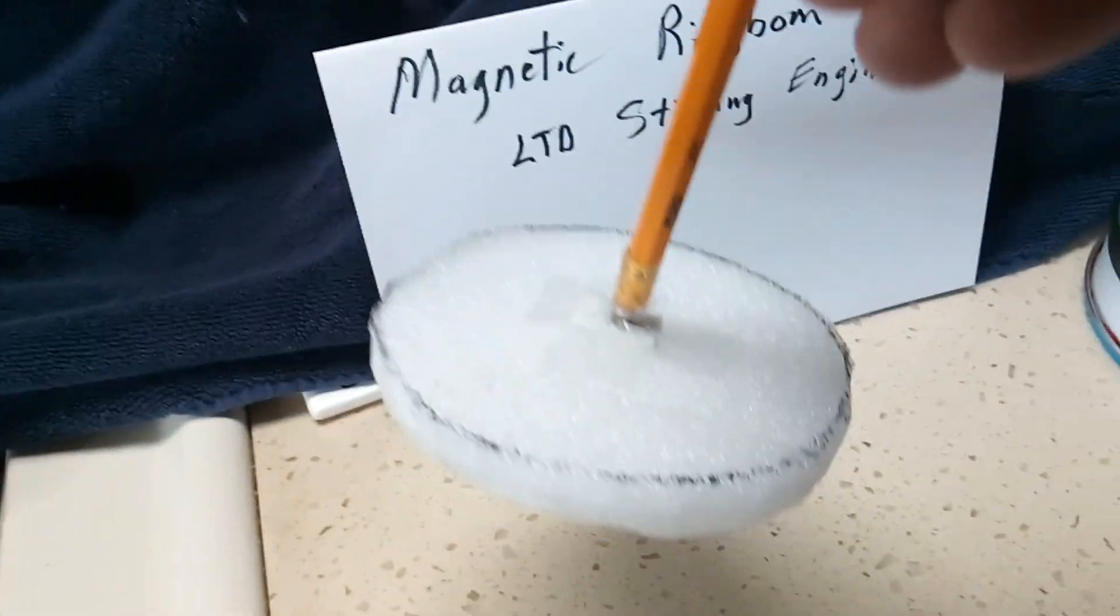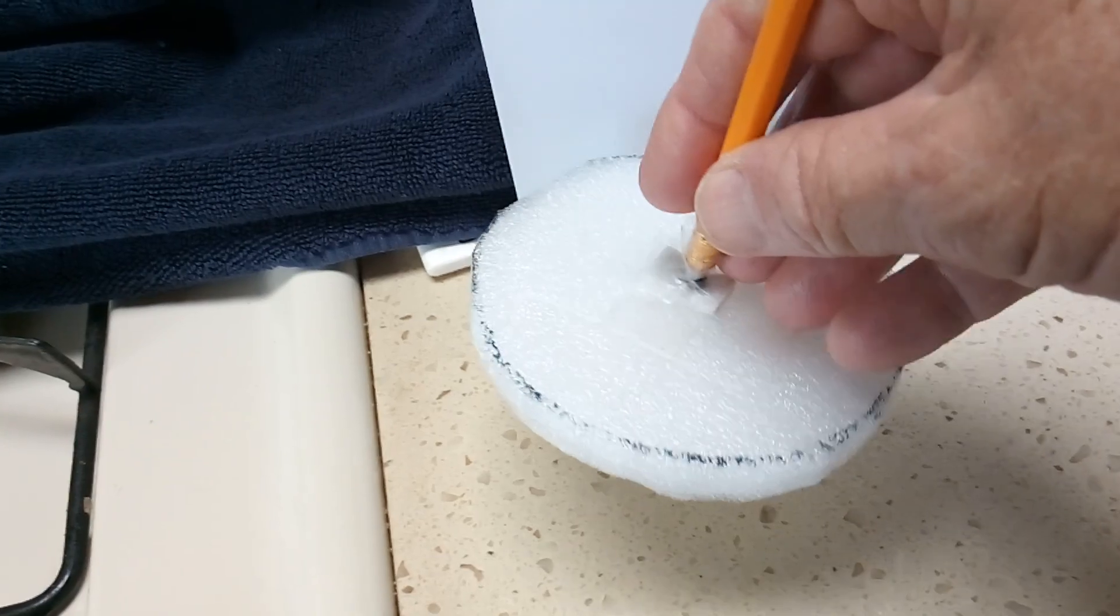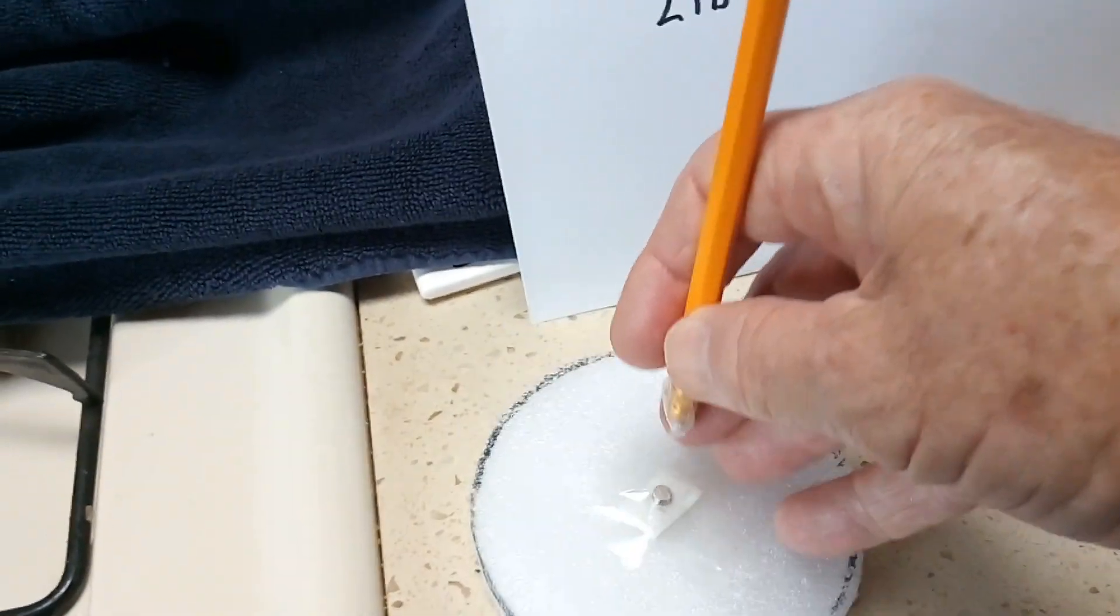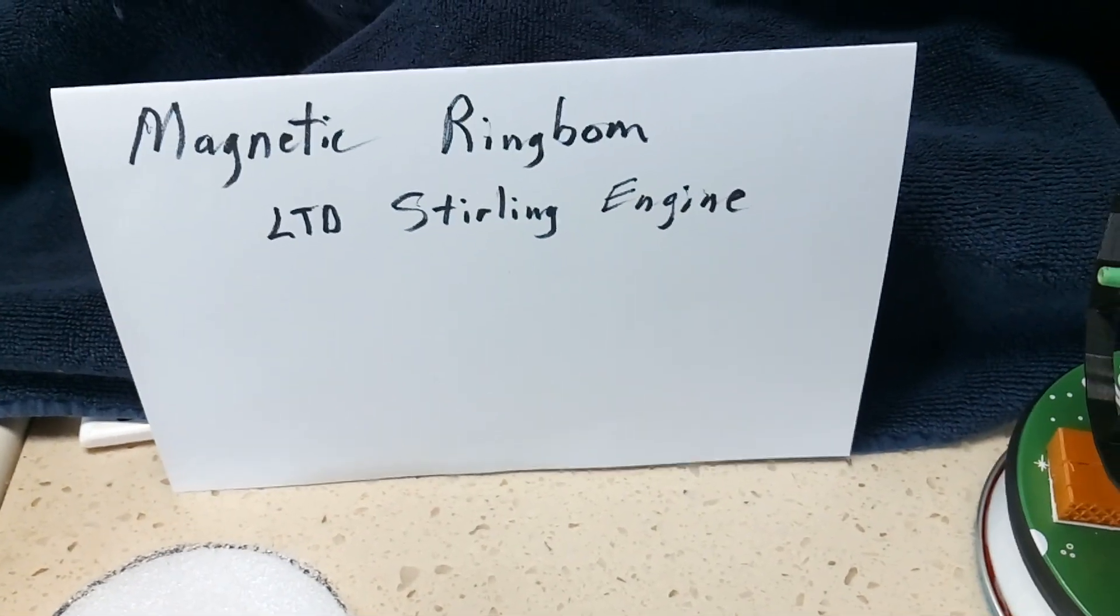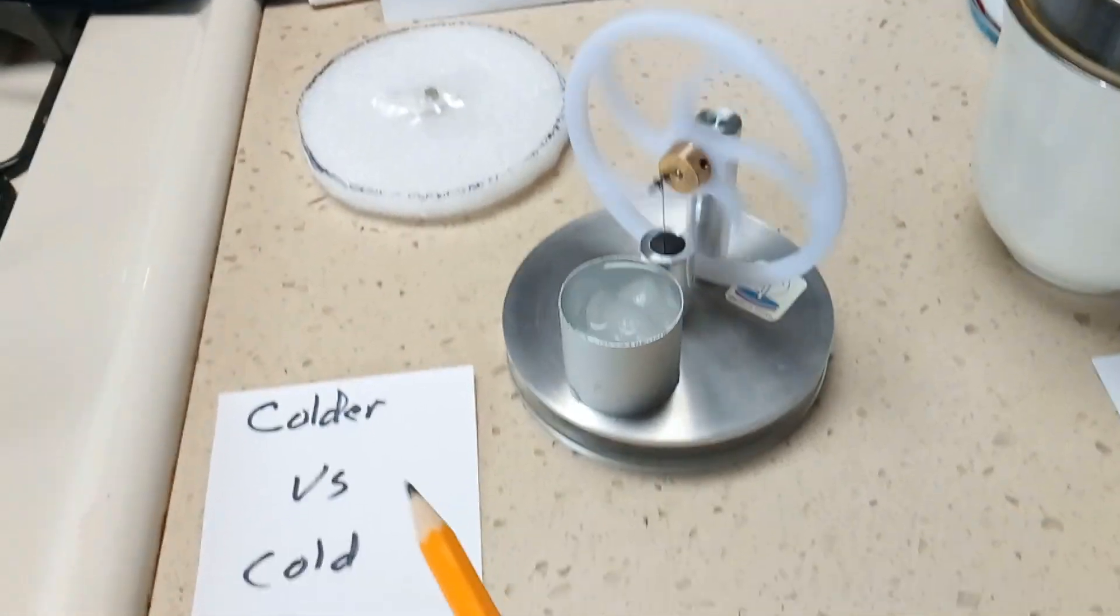On the bottom of the piston is a magnet like that that picks up the displacer and moves it up until it hits the top of the chamber, then it falls off by gravity. They call these magnetic ring bomb LTD Sterling engines.